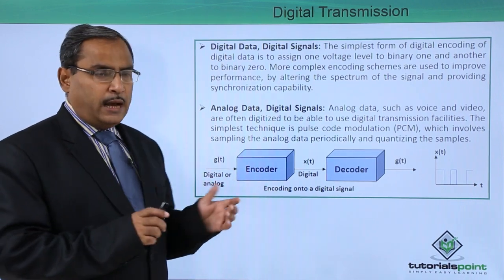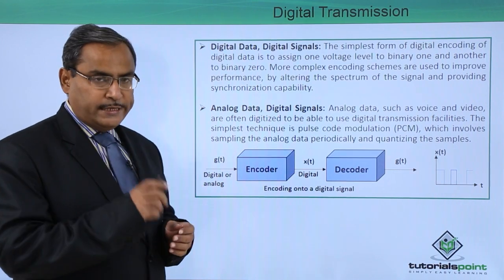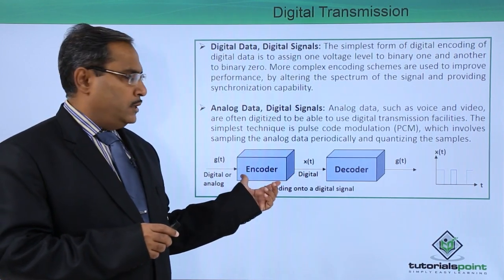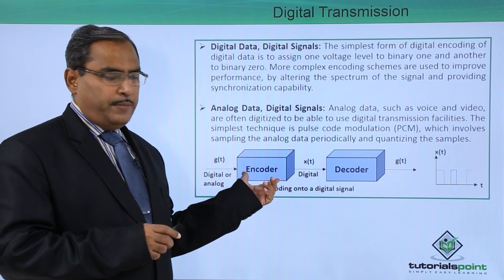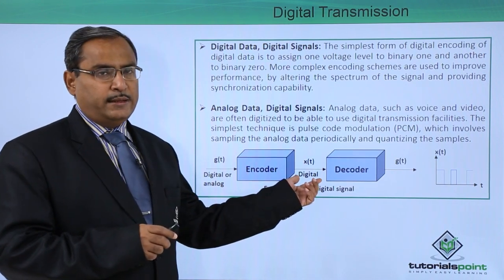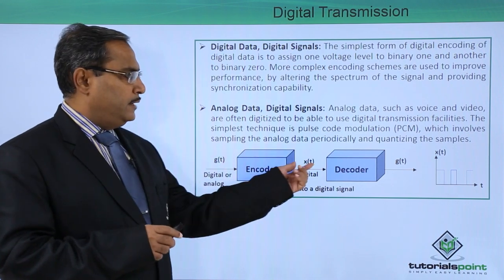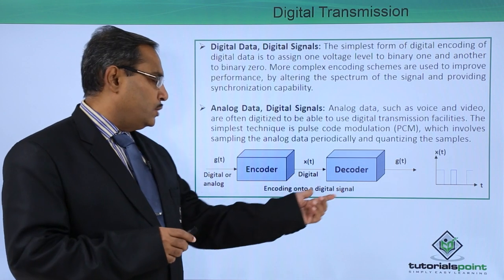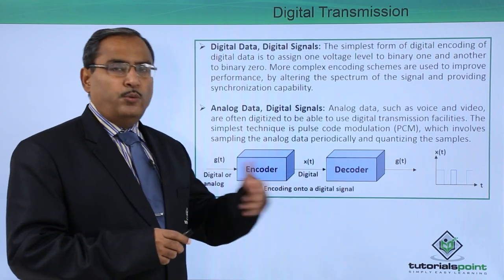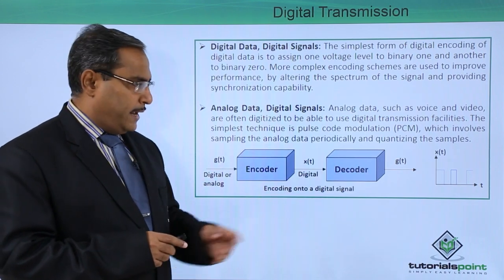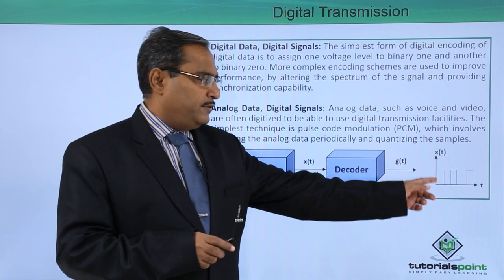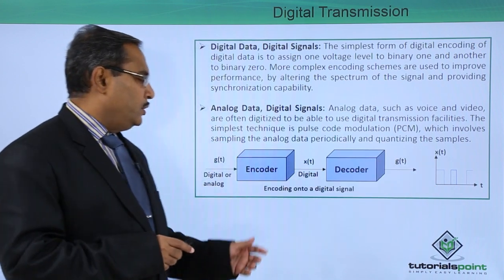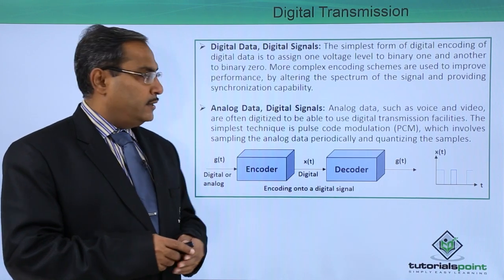Our data will be either in the form of digital or analog. Initially, we will have an encoder, and this encoder will make the digital signal available in the media — let it be g(t). Then at the receiving end, we will have a decoder which will reform g(t) back again. If you plot x(t) along time, the waveform will have a shape like this one — encoding onto a digital signal.